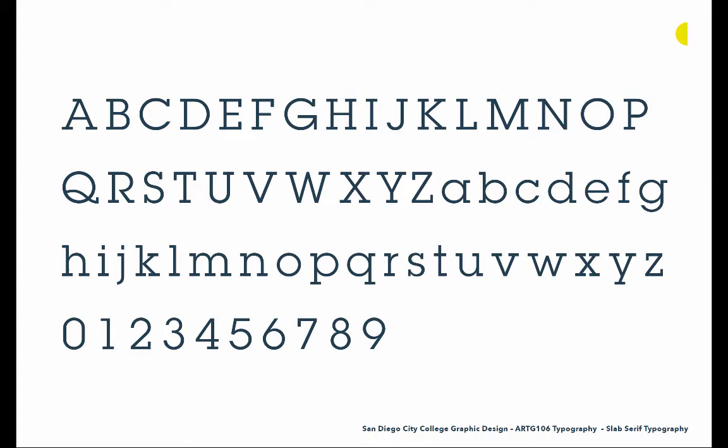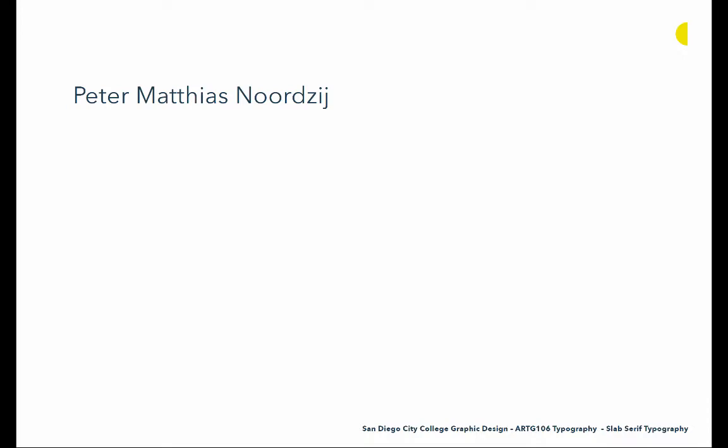Then we have Herb Lubalin, someone we looked at who created Avant Garde. In 1974 he looked at Avant Garde and created what we know as Lubalin Graph, which is a slab serif typeface that was meant to work in conjunction with Avant Garde — or to be similar to the look and design aesthetics of that typeface.